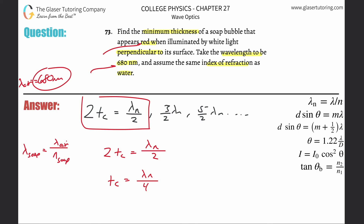Plugging in values: the wavelength in the soap equals 680 nanometers divided by 1.333, which is the index of refraction of water — the assumed index of refraction of the soap. That gives us a wavelength in the soap of approximately 510 nanometers.